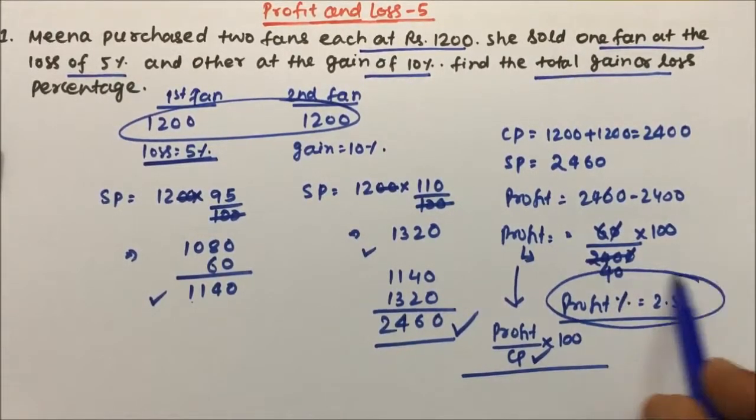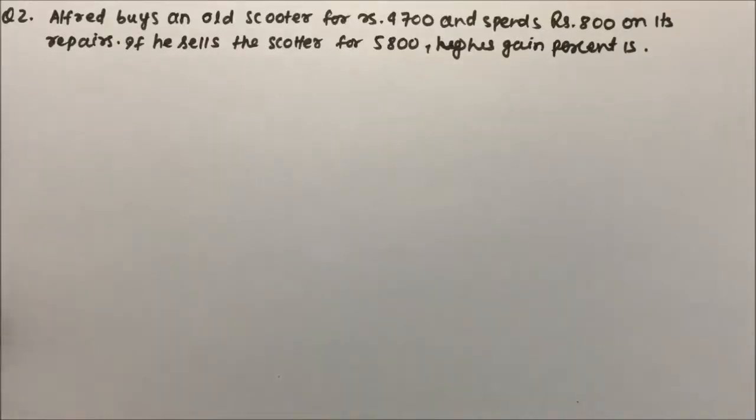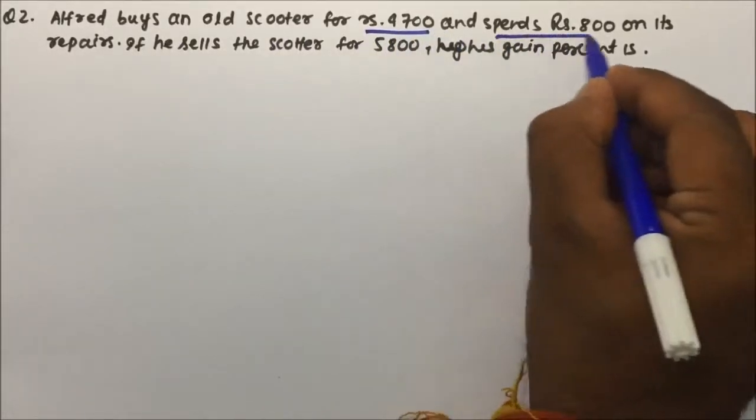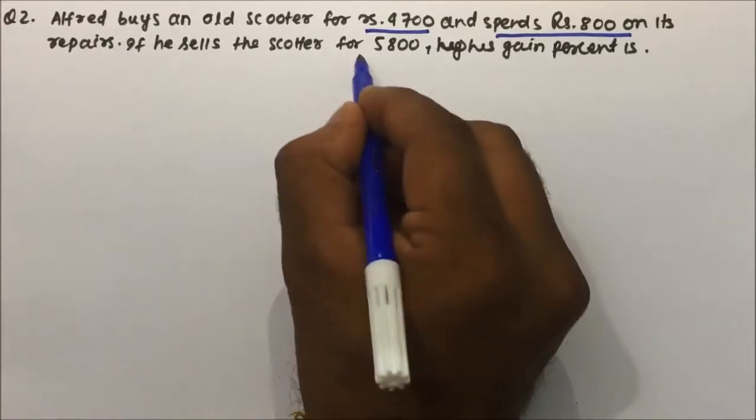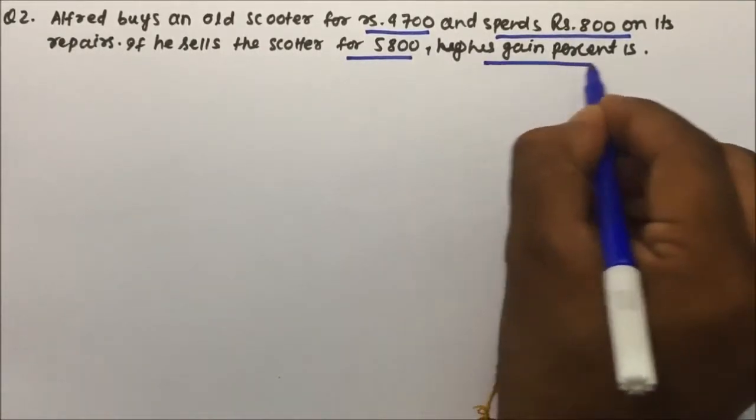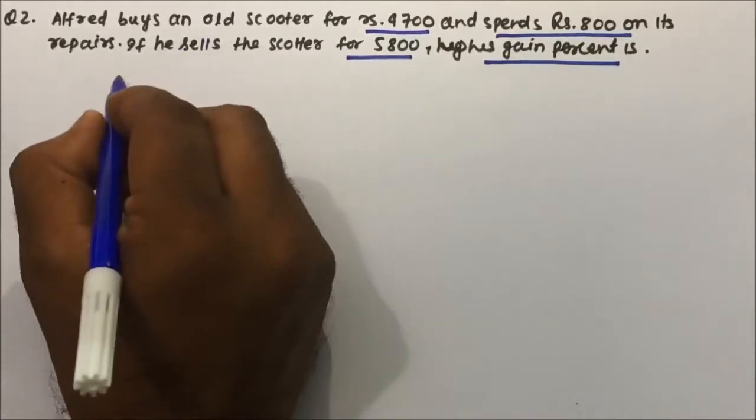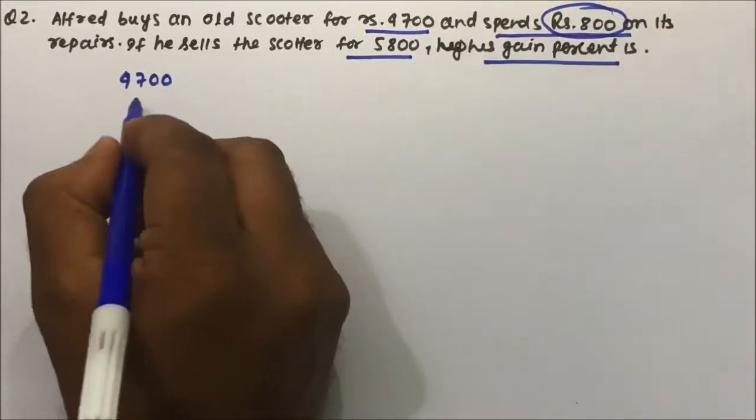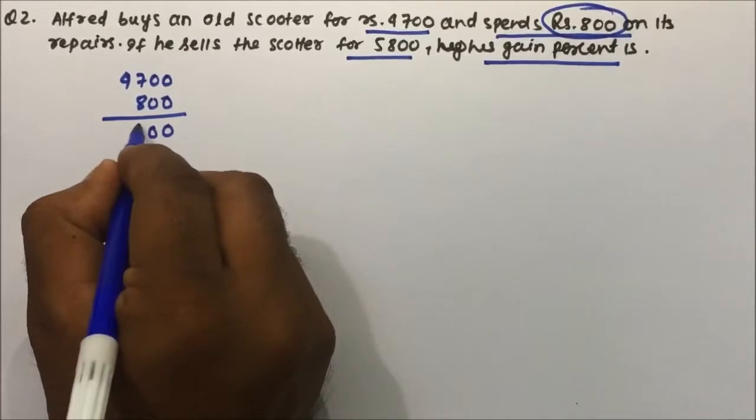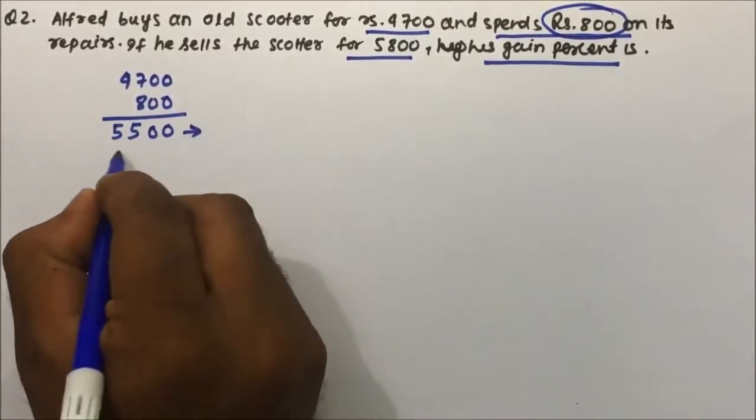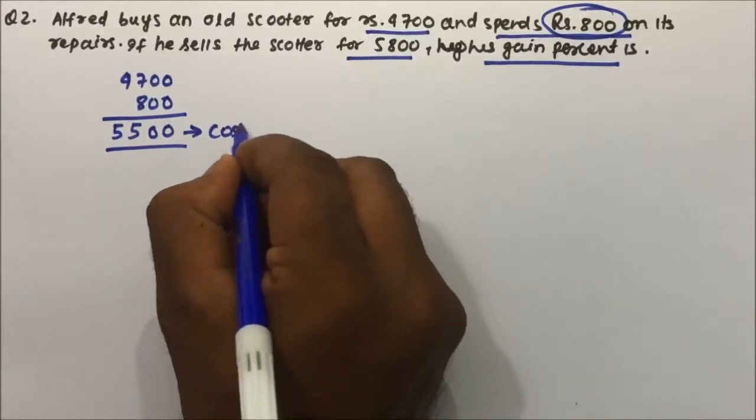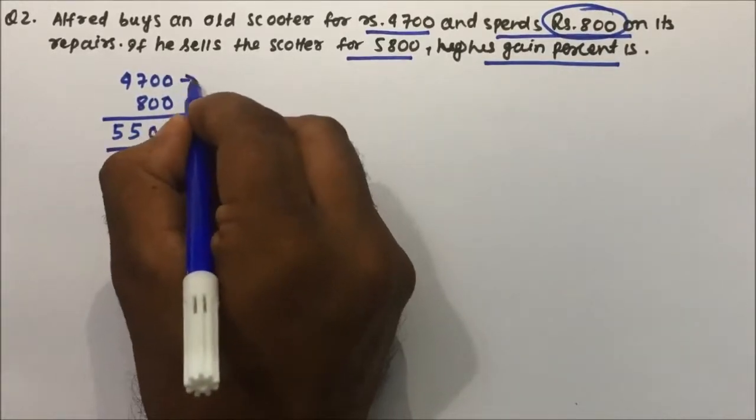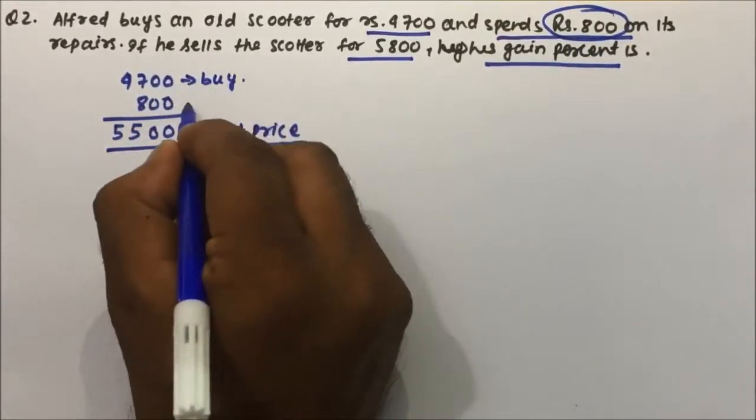Question number two is saying Alfred buys an old scooter for rupees 4700 and spends 800 on its repairs. If he sells the scooter for 5800, his gain percentage is? In the question it is given Alfred is buying a scooter for 4700 rupees and then again he is spending 800 on that, so total money which Alfred is investing on the scooter is 5500 rupees and that becomes the cost price of the scooter.